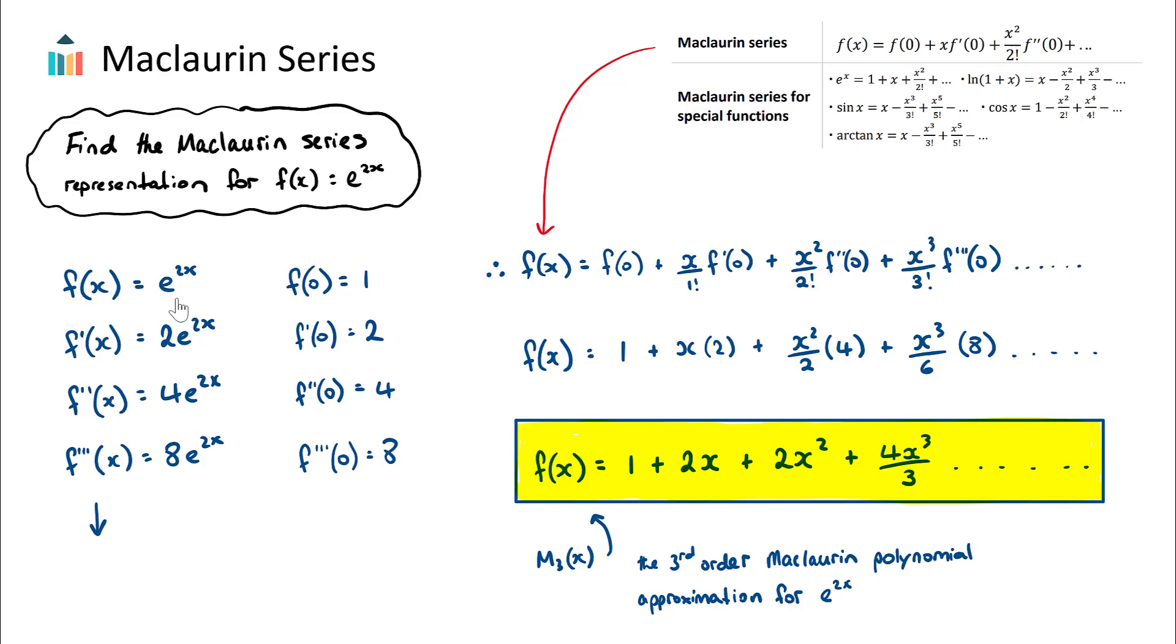What we want to do is keep taking the derivatives and you'll see why this is important. This is quite a simple example here. If we have e to the power of 2x, the first derivative will be 2 times e to the power of 2x, just using our normal differentiation rules. The second derivative will be 4 times e to the power of 2x. The third derivative will be 8 times e to the power of 2x. And this can continue on forever.